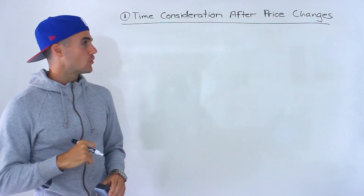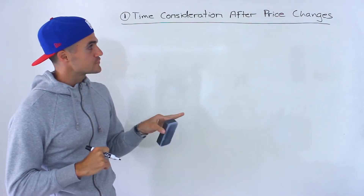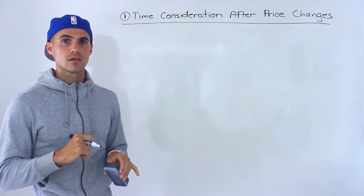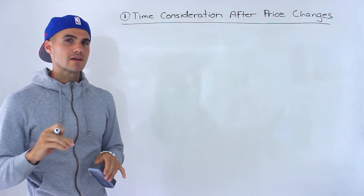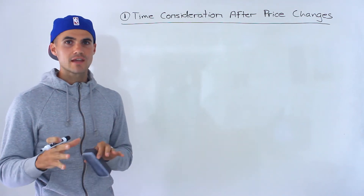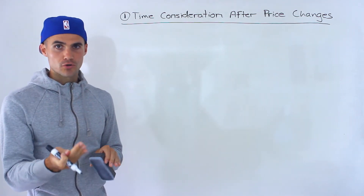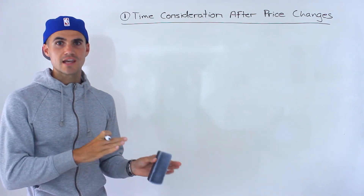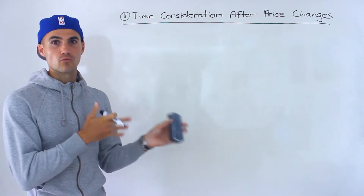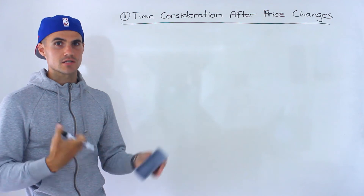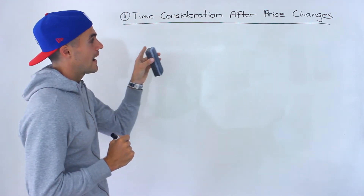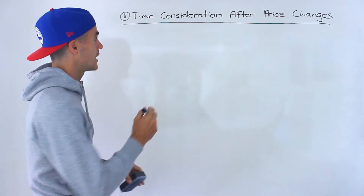The first factor we'll go over is the time consideration after price changes. This was also a factor when we covered the price elasticity of demand, but with supply it's actually going to be a bigger deal. The reason why is that in the majority of cases, it takes longer for producers to adjust to price changes than it does for consumers. Consumers can usually go to another source pretty rapidly, whereas producers have to adjust a lot of resources. With time consideration, we're going to look at three different time periods.